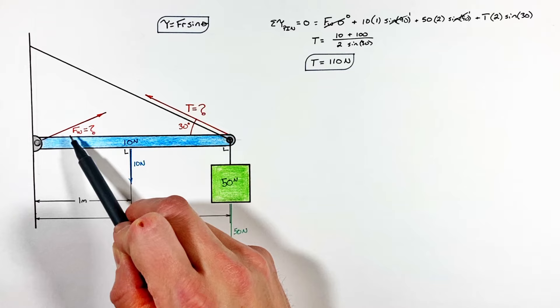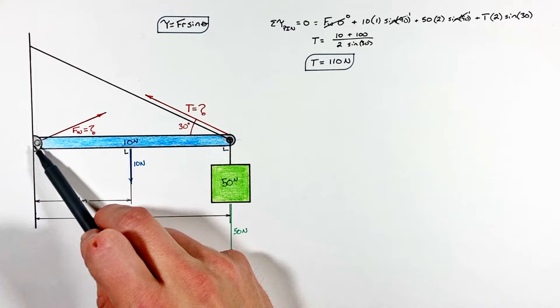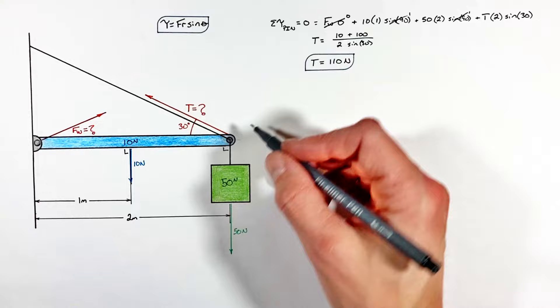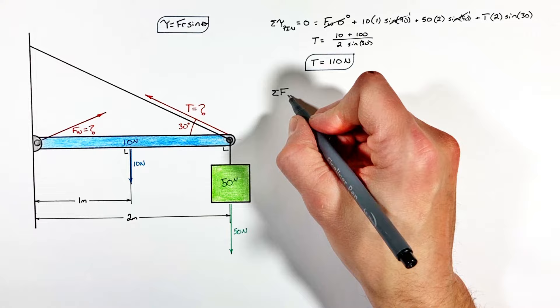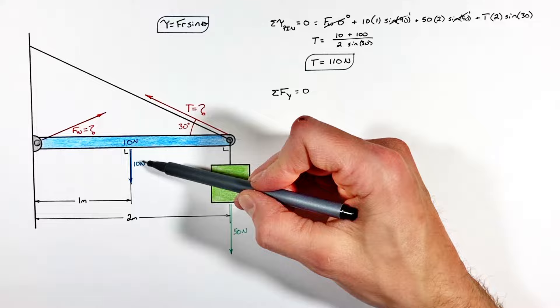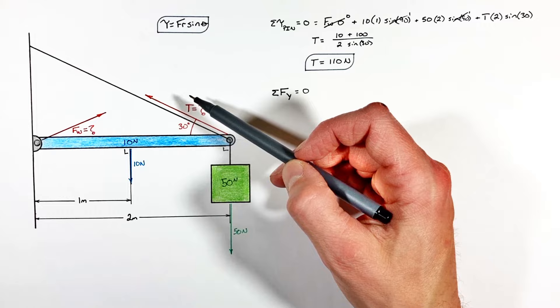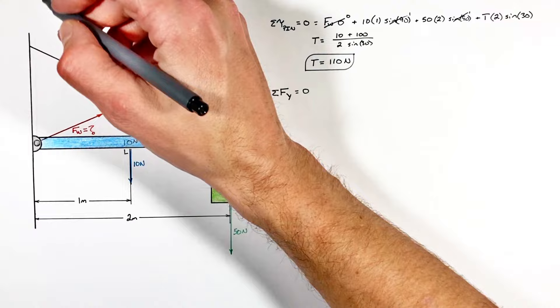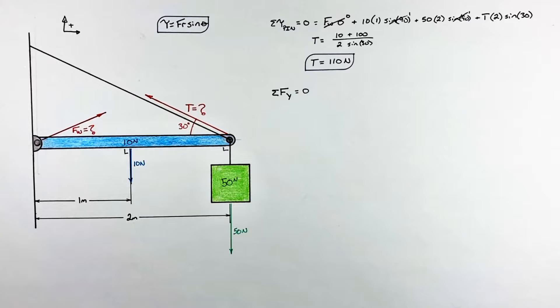Now that we know the tension in the cable is 110 Newtons, we need to turn our attention to the force by the wall. We can't use torque to solve for the wall force here, so we need to use our other conditions for static equilibrium — looking at the sum of all forces along each axis. Starting with the sum of all forces in the y-axis: we need to be careful with positives and negatives. We'll define up and to the right as the positive direction.